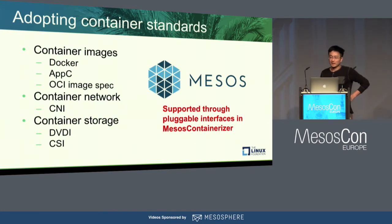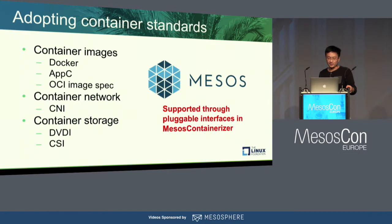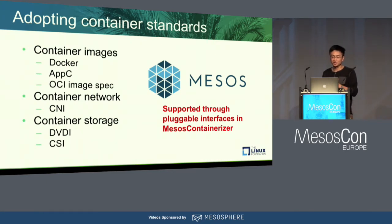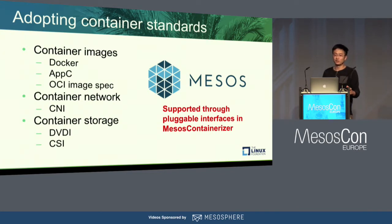After 2016, the direction we took in the containerization project was adopting new container standards. There's been a lot of standardization work in the last couple of years, and we're trying to adopt those standards. I categorize them into three major categories: container image, container network, and container storage. These are the major three areas where people are making standards, and I'll talk about each of these in the next few slides.